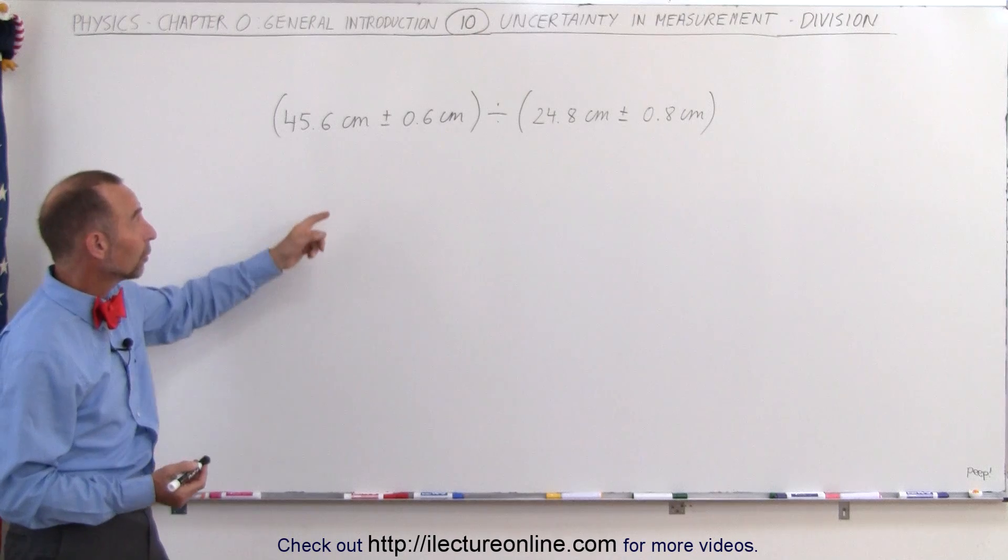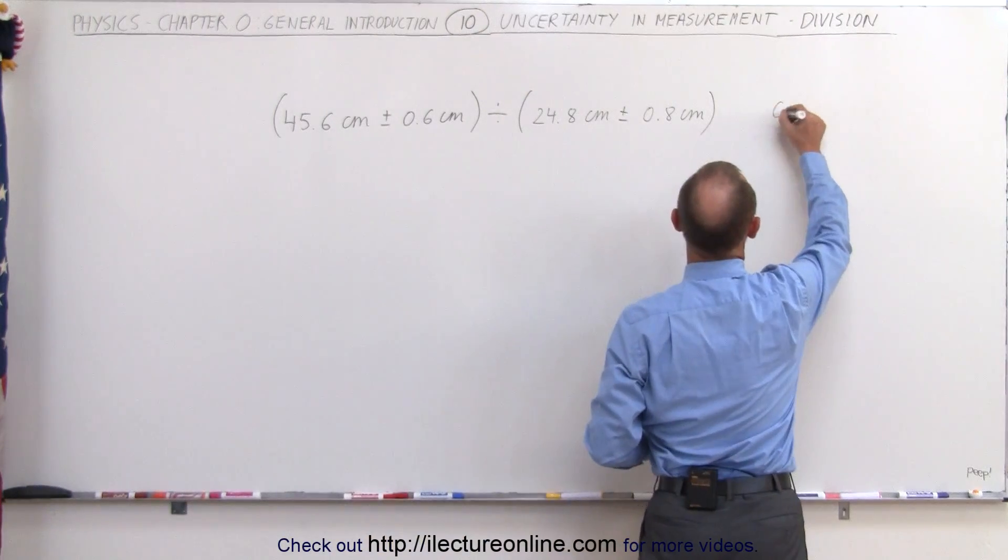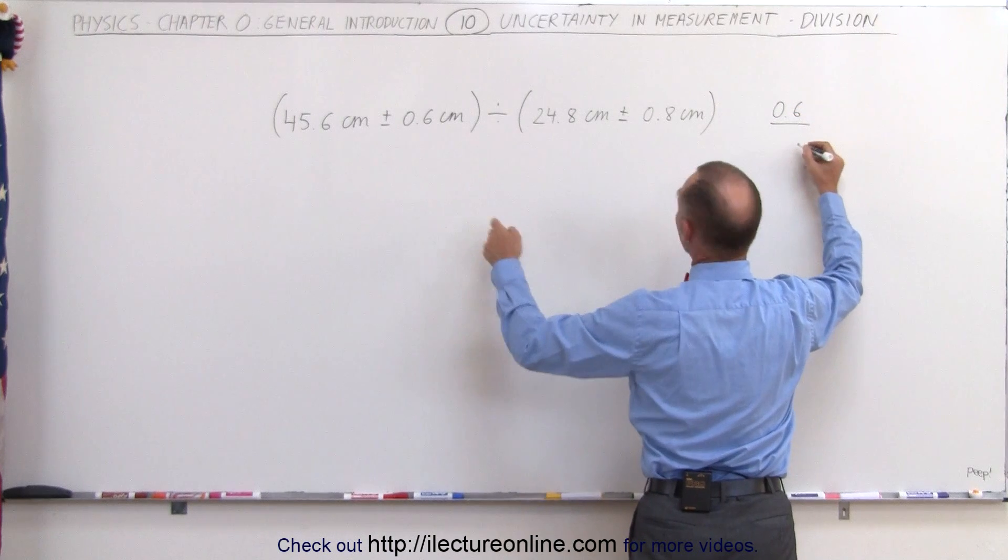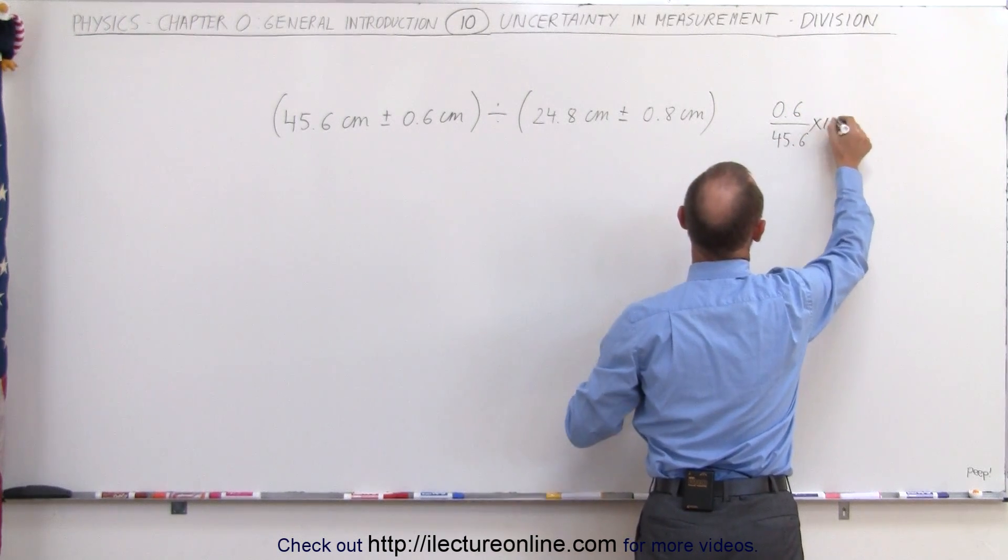So let me show you. First of all, we're going to convert 0.6 to a percentage. So we take 0.6 divided by 45.6 multiplied by 100%.